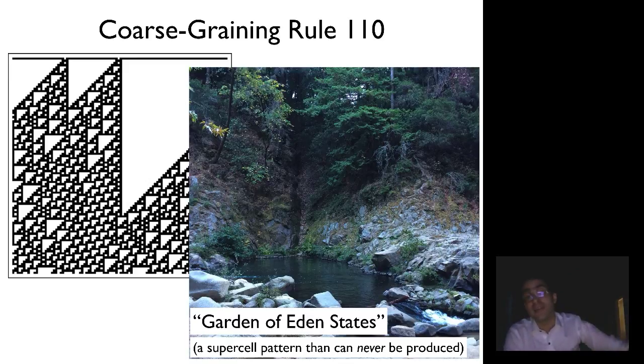Once they're gone, they're gone forever, and the evolution operator will never recreate them. They're kind of expelled from the Garden of Eden. So rule 110 has Garden of Eden states. It destroys them irreversibly at the first time step, and so now you can probably guess what this projection operator is going to do.